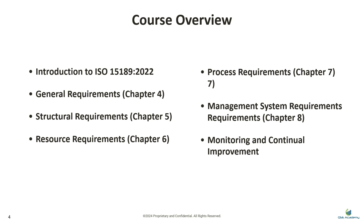Chapter 7: Process Requirements. This is where we get into the nitty-gritty of your lab's daily operations. We'll guide you through every stage of the laboratory process, from sample handling and method validation to test result reporting. The goal here is to ensure consistency, transparency, and accuracy in all your processes, which is key to building trust with patients and stakeholders. Chapter 8: Management System Requirements. A robust management system is the backbone of any successful lab. In this chapter, we'll explain how to implement effective internal audits, handle corrective actions, and drive continual improvement. These steps ensure your lab not only meets ISO 15189 requirements, but also sustains excellence over the long term, monitoring and continual improvement.